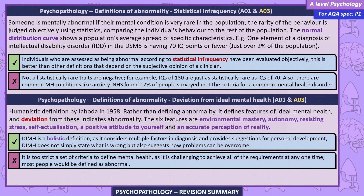Deviation from ideal mental health. A humanistic definition by Jahoda in 1958. Rather than defining abnormality, it defines features of ideal mental health, and deviation from these indicates abnormality. The six features are: environmental mastery, autonomy, resisting stress, self-actualization, a positive attitude to yourself, and an accurate perception of reality.